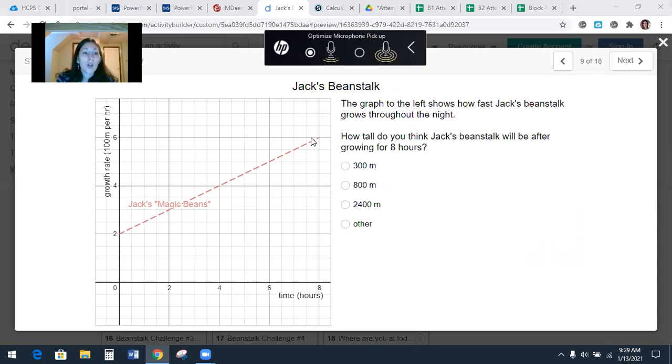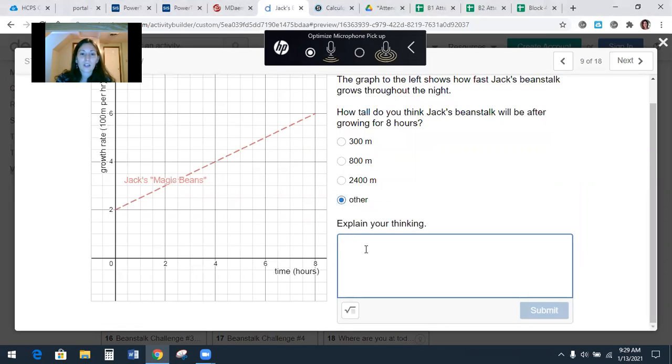So this one, it's not a constant rate anymore. It starts out growing at 200 meters per hour and it speeds up. So it's growing faster and faster and faster until it's growing at 600 meters per hour. So how tall do you think it's going to be after growing for eight hours? Well, there are choices here, but how could you find out the answer exactly? Well, last time we did base times height, it was a rectangle. Hey guys, what shape do we have here? It's on its side, but what shape is this? Good. It's a trapezoid.